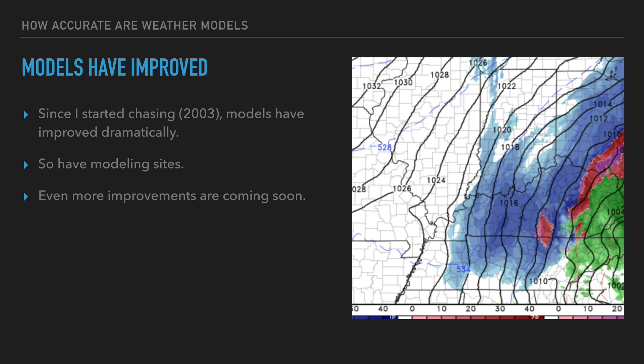Models have improved over time. When I started chasing in 2003, models were there and sometimes pretty good, but they were a very unreliable tool at times. They have improved dramatically since then — it is amazing how much better models are today. Modeling sites are way better; COD has an amazing interface for modeling. You should donate to them. There are also more modeling improvements coming soon — some really good short-term modeling the National Weather Service is working on, plus improvements to things like the GFS and the HRRR.